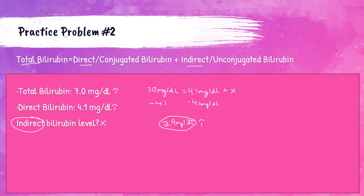This particular patient obviously has some issues going on. They're probably jaundiced, which means yellowing of their skin and the sclera of their eyes — the white portion of the eyeball. Their sample is very likely icteric, meaning when spun down, the serum or plasma will have a dark yellowish, greenish, or brownish coloration. All values are elevated: total bilirubin, direct bilirubin, and indirect bilirubin.